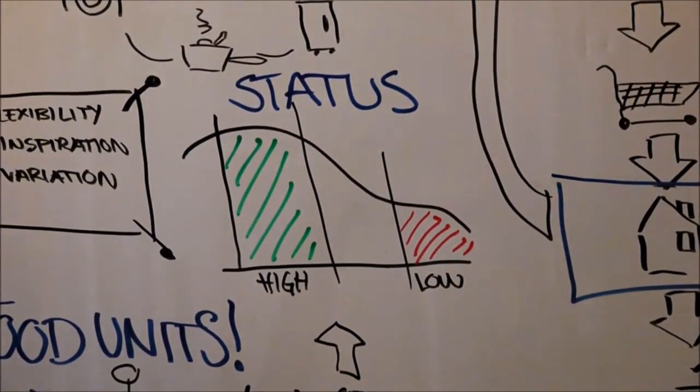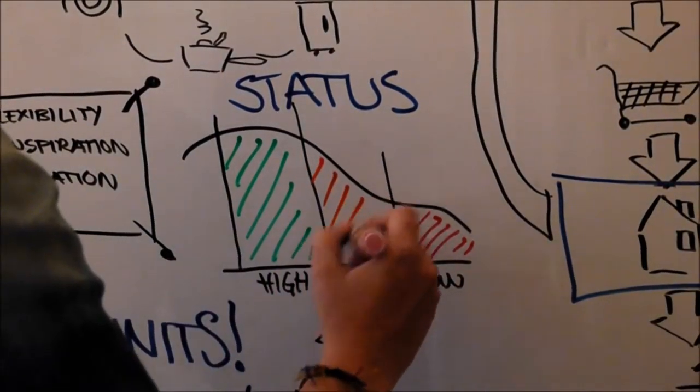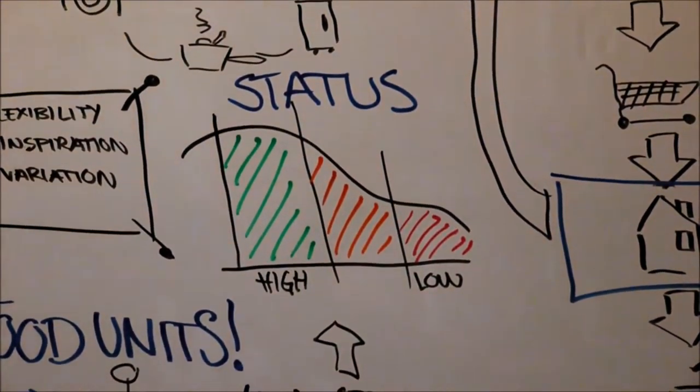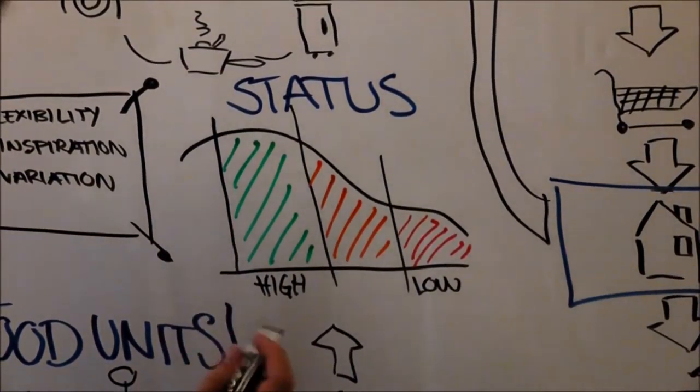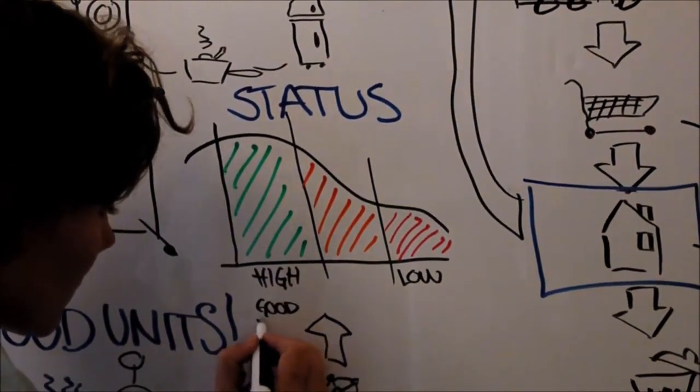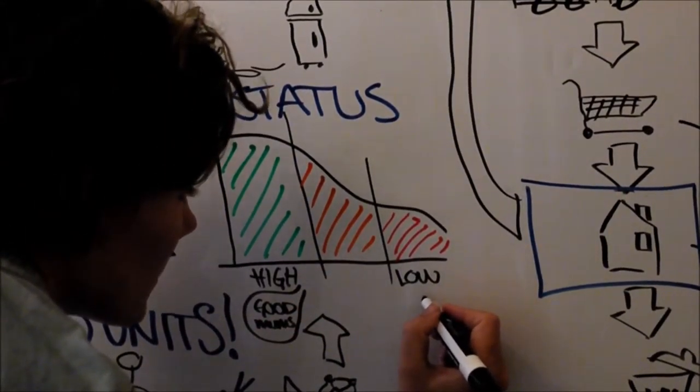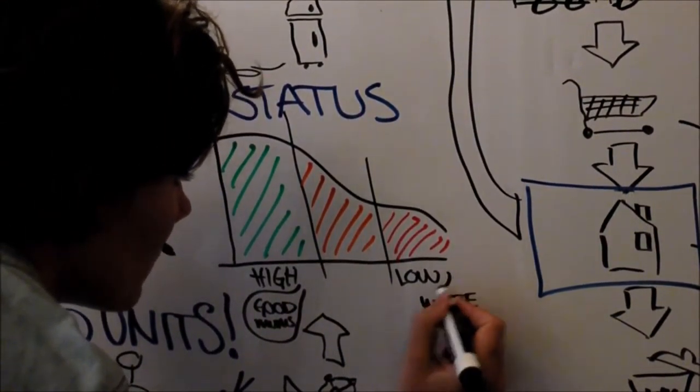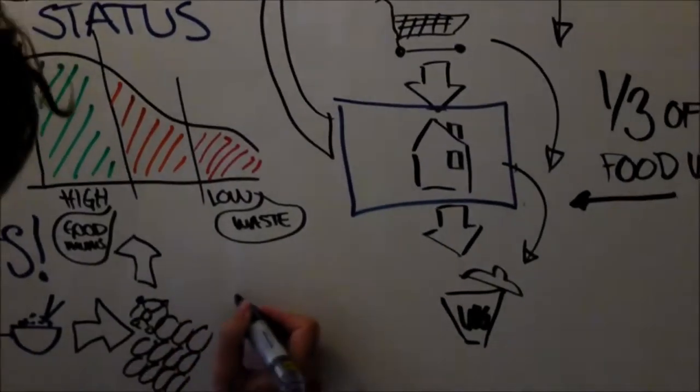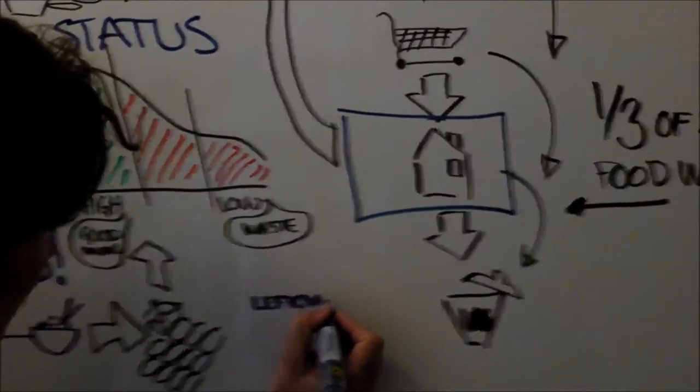Ingredients with lower status are left in the fridge and sometimes almost forgotten on purpose until they're too old to be eaten and therefore it's okay to throw them out. We call this the red zone. When food has reached the red zone, it's not considered food anymore, it's just waste. Thereby people don't consider themselves as food wasters.